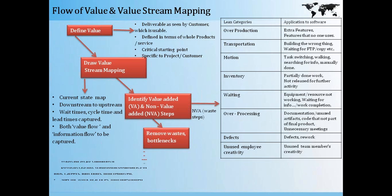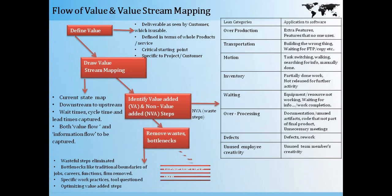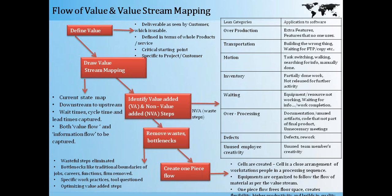Once we identify all the non-value-added steps, we need to remove all the waste and bottlenecks. Traditional boundaries of jobs, career functions, and firms should be removed. Specific work practices and tools should be questioned. We also need to optimize the value-added steps to the maximum extent possible. Once that is done, we create a one-piece flow, which is the future state value stream map. We need to create cells — close arrangements of workstations and people in a processing sequence — and equipment needs to be organized to follow the flow of material as per the value stream.